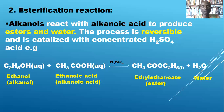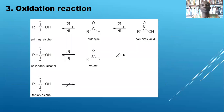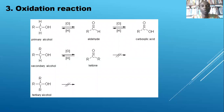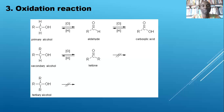Third is oxidation. Primary alkanols undergo oxidation to form an aldehyde, and further oxidation produces a carboxylic acid. Secondary alkanols undergo oxidation to form a ketone and do not oxidize further. Tertiary alkanols do not undergo oxidation at all. So primary and secondary alkanols undergo oxidation, but tertiary alkanols do not.